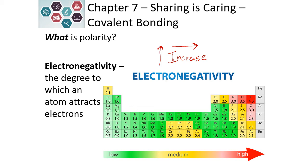In general, the further apart things are on the periodic table, the greater the difference in electronegativity. There is one exception we'll look at in more depth: hydrogen and carbon are pretty close in electronegativity.